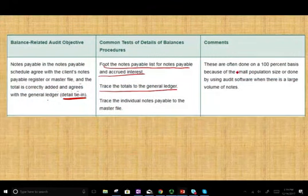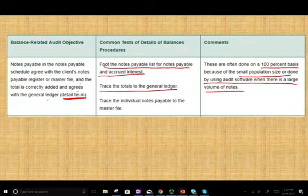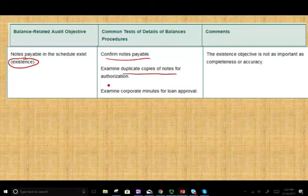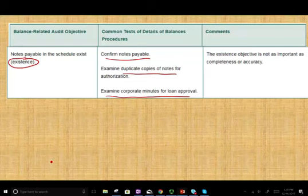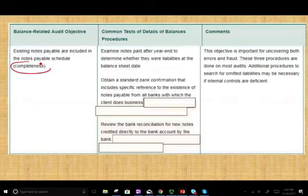The detailed tie-in for the notes, these are often done on a 100% basis because of the small population size or done by using audit software if there's a large volume of notes. So when we usually audit the notes, we audit them 100% because for one thing, they're important and there shouldn't be a lot of them. And if there's a lot of them, use audit software. Existence. Notes payable in the schedule exist. You confirm the notes payable, examine duplicate copies of notes for authorization, examine corporate minutes for loan approval. So the loan does actually exist. Well, that's not really an issue. The existing objective is not important as completeness or accuracy. So companies don't put loan on their books if they don't exist. So we're not really concerned with existence.